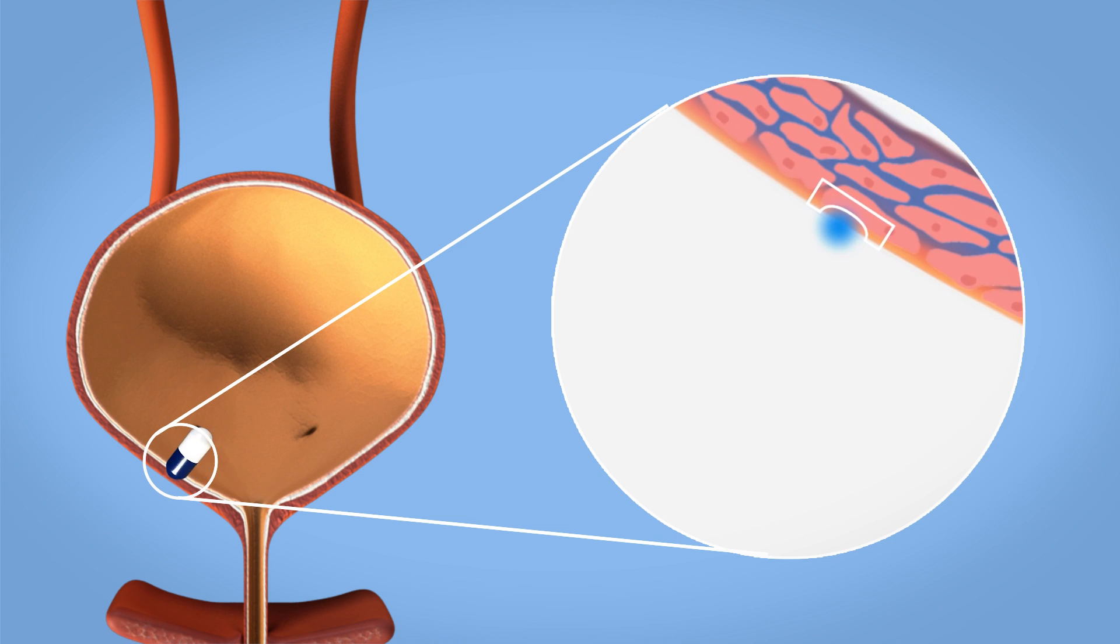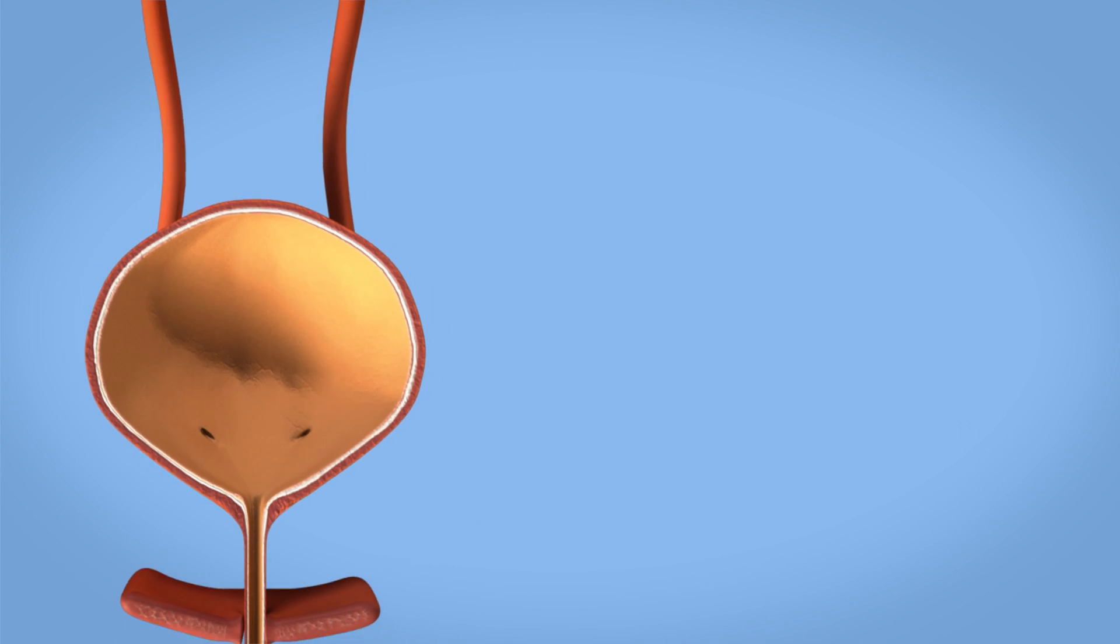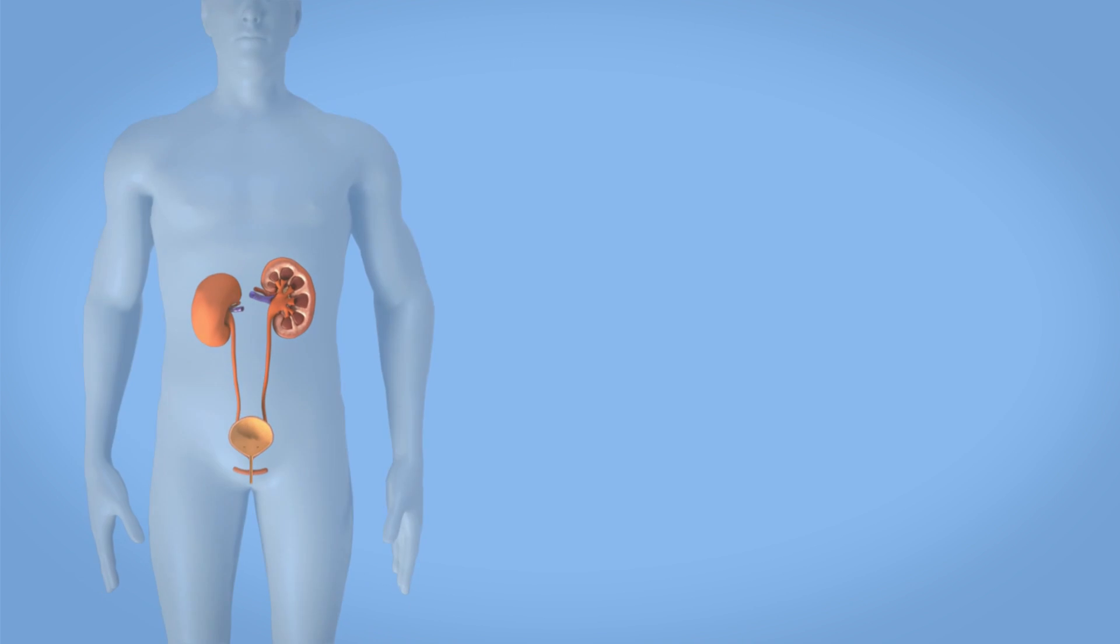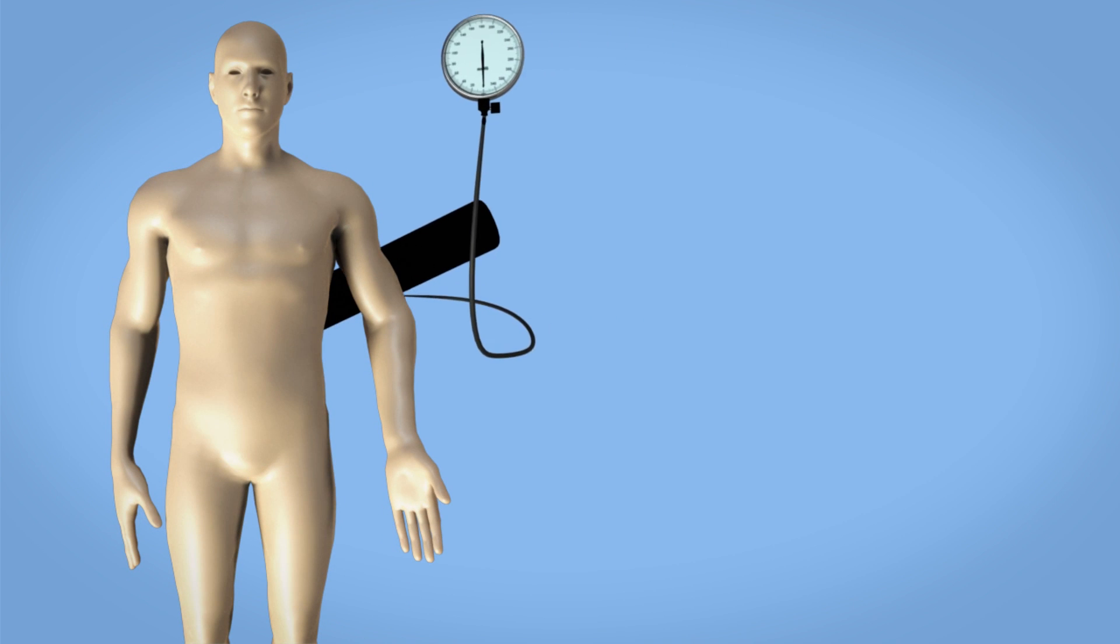As a result, your bladder capacity increases and you will feel the need to urinate less often. Before starting drug therapy with a beta-3 agonist, your blood pressure should be checked.